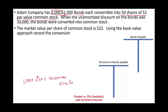The par value per stock is $1. When the unamortized discount on the bonds was $30,000 — meaning those bonds are recorded on the books at a discount — and there is $30,000 of unamortized discount, the bonds were converted into common stock.